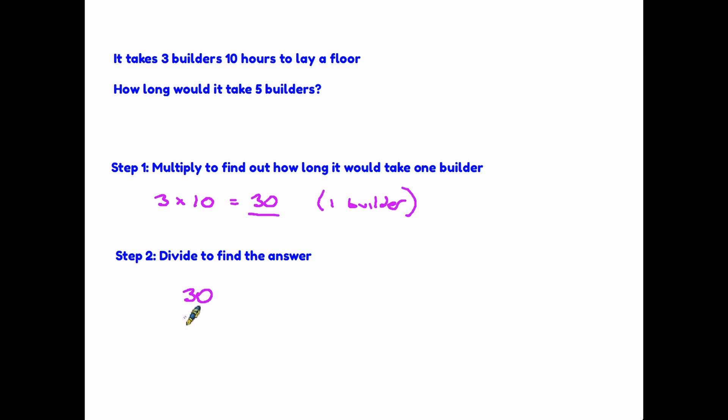So we have thirty hours of labour altogether. That's what it would take one builder, thirty hours. But, in fact, we don't have one builder now. The question is asking us about five builders. Therefore, we can divide by five to find out how long it would take five builders. So five builders, it would take six hours. So as you can see, the actual steps are the same. We have a multiply and a divide, but we do it in the opposite direction.